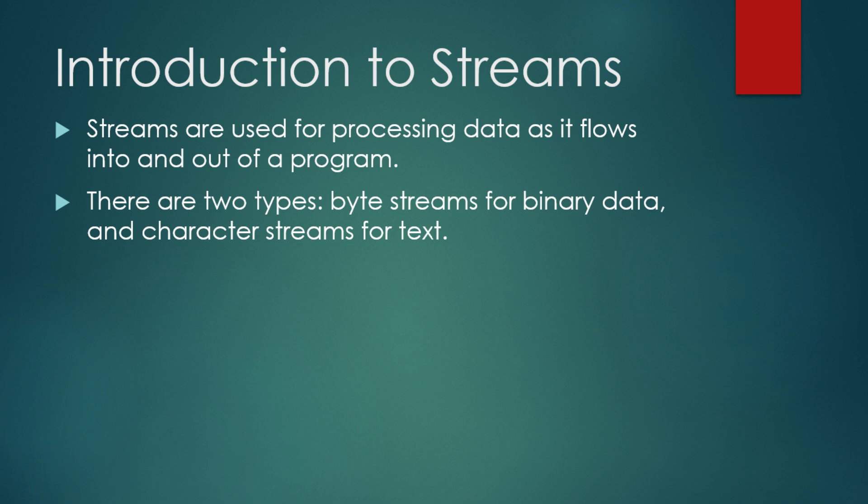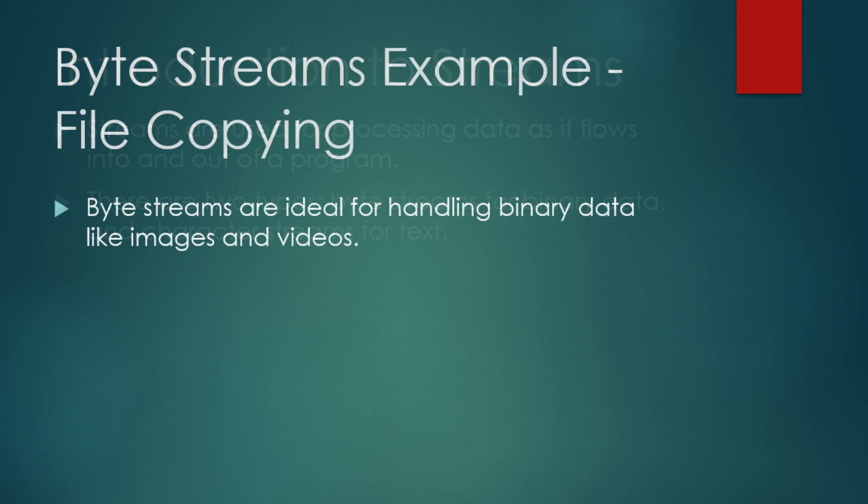Byte streams for handling binary data, and character streams for handling text data. Let's look at an example of using byte streams to copy a file. This is a common task when dealing with binary data like images or videos.